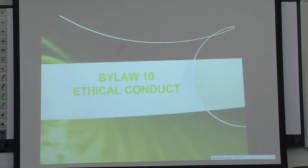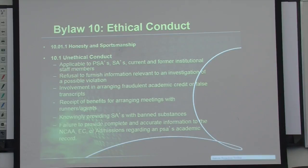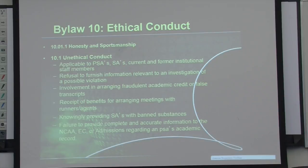Bylaw 10 is Ethical Conduct. Everything we do is centered around honesty and sportsmanship, and ethical conduct is the foothold of NCAA regulations. This is applicable to all prospective student-athletes, current student-athletes, and current and former institutional staff members. Major violations include refusing to furnish information relevant to an investigation, arranging fraudulent academic credit or false transcripts, receipt of benefits from agents, providing student-athletes with banned substances, or failing to provide complete and accurate information to the NCAA eligibility center.